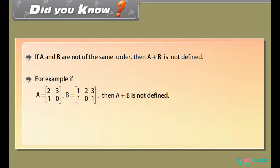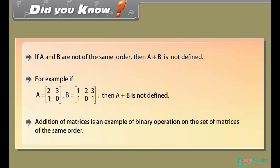For example, if A is a 2 by 2 matrix with entries [2, 3; 1, 0] and B is a 2 by 3 matrix with entries [1, 2, 3; 1, 0, 1], then A plus B is not defined because they have different orders. Addition of matrices is an example of a binary operation on the set of matrices of the same order.